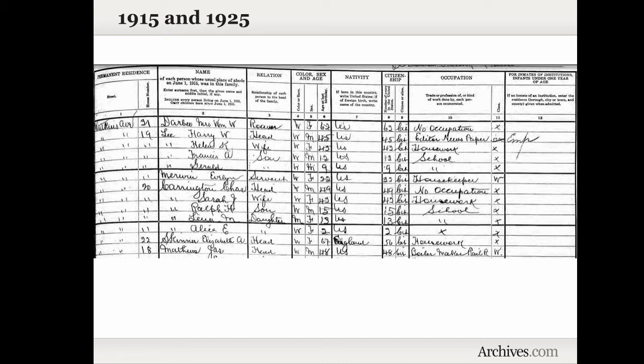The 1915 and 1925 New York State Censuses are virtually identical to each other, and they have a lot more information than what we had in 1892. We have information including relationships to the head of household, race, the person's sex, their age, and where they were born — unfortunately it only includes the country, and for those born in the United States it doesn't list what state they were born in. It lists whether they were a citizen or an alien, their occupation, and what class of worker they were — whether they were an employer, worked for wages, or worked on their own account, in other words, self-employed.